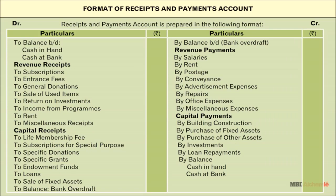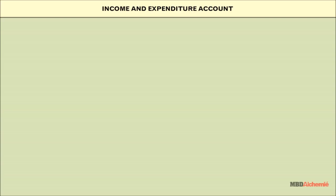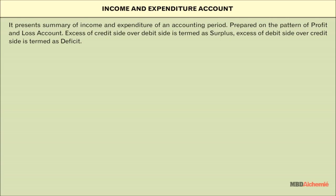The purpose of the receipts and payments account is to show closing cash and bank amounts, and we will look at its format. The difference between receipts and payments account and cash book will also be covered. The income and expenditure account presents a summary of income and expenditure of an accounting period. It is prepared on the pattern of a profit and loss account, and excess of credit side over debit side is termed as surplus, while the vice versa is called deficit.